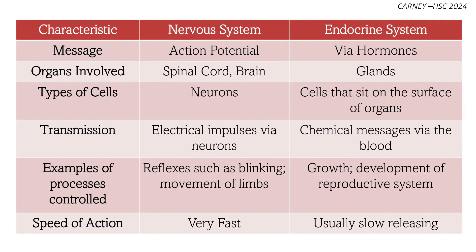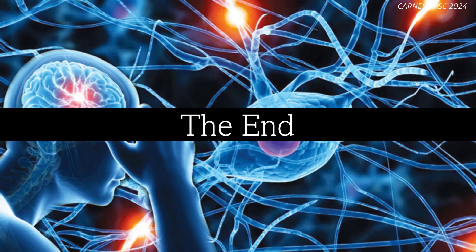To summarize the characteristics of the nervous and endocrine system: while they both work together to maintain homeostasis, they each have distinguishing features — such as how they send messages, action potentials for the nervous system and hormones for the endocrine system, and how they transmit these messages, electrical impulses for the nervous system and chemical messages for the endocrine system. And that's the end of episode two. Thank you for watching.